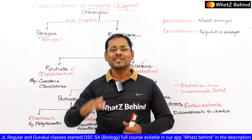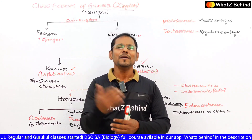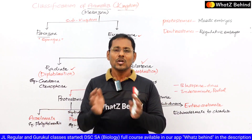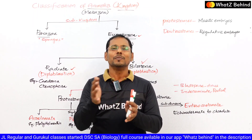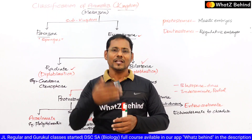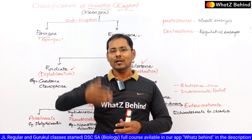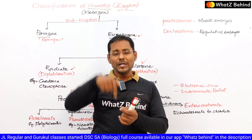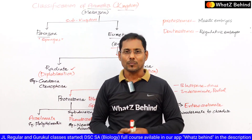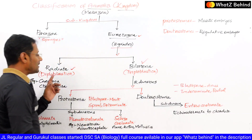All diploblastic organisms exhibit radial symmetry. Radial symmetry means if you cut an organism in any plane passing through the central axis, it divides into two equal similar parts — those are called antimeres. For example, Hydra and jellyfish exhibit radial symmetry. They are diploblastic animals. The second grade is Bilateria — 'lateral' means side. Such organisms are called Bilaterians and they exhibit bilateral symmetry.